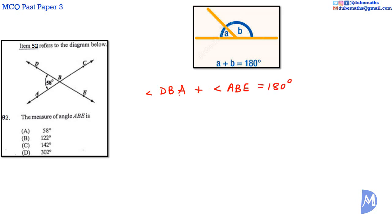Angle DBA is equal to 58 degrees. Angle ABE is the angle we are asked to find. Making angle ABE the subject of the formula, we minus 58 on both sides. 58 degrees minus 58 degrees gives 0, so we are left with angle ABE on this side. Then we minus 58 degrees on the right-hand side.